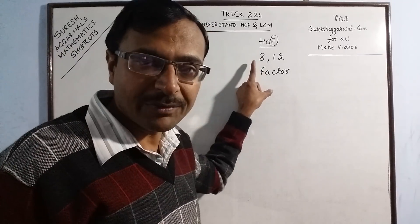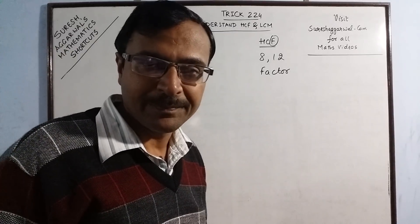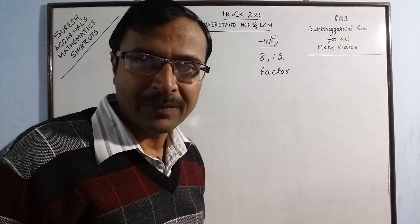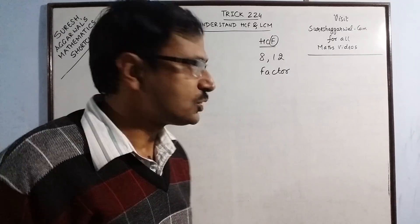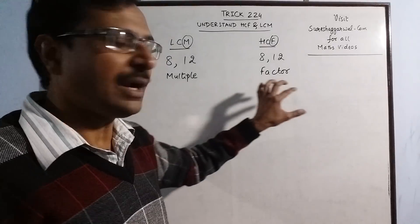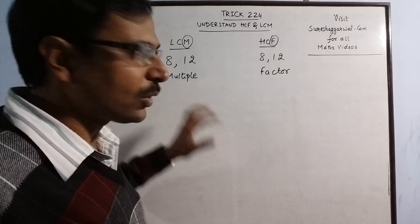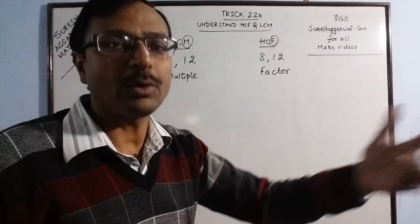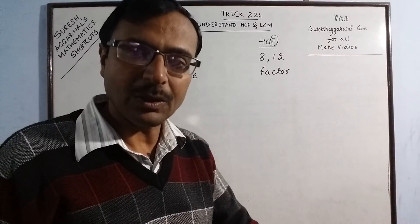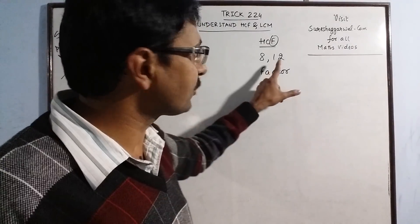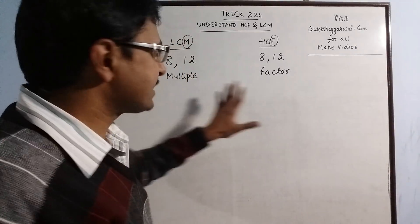Now suppose I have to count all the factors of 8. Then I have to start from 1, then move on to 2 because 2 4s are 8, then move on to 4 because 4 2s are 8, and then finally end at 8 itself because 8 1s are 8. So understanding of multiple and factor is very important. Multiples are always greater than the number.